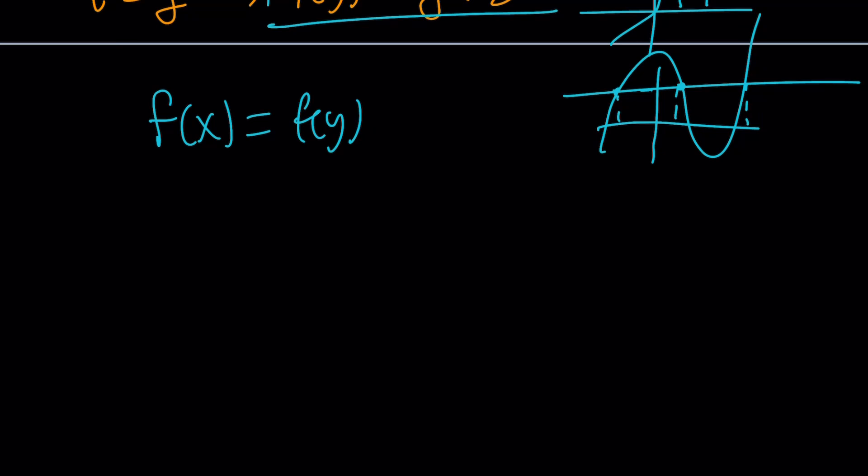I should probably define it in a better way. With one-to-one functions, you cannot have two different inputs giving you the same output. Or, if the two outputs are the same, then inputs have to be the same too. So f(x) = f(y) implies x = y with one-to-one functions. I think they're also called injective.